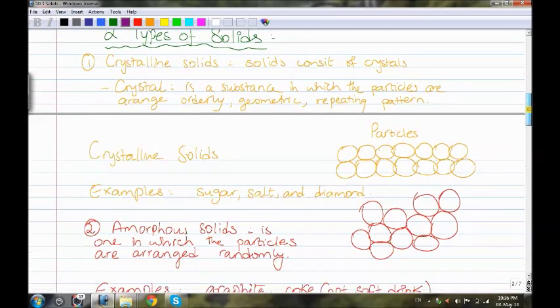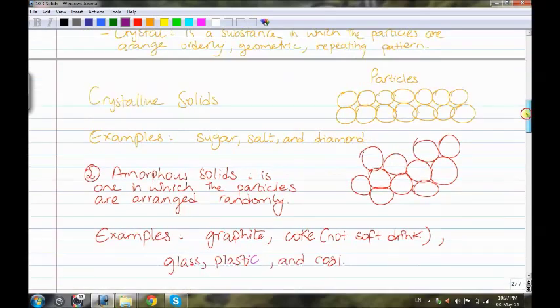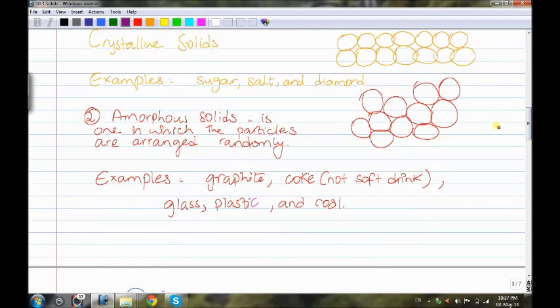Then we move on to the second type of solids, which is the amorphous solid. It is one in which the particles are arranged randomly. As you can see here, they are in a random arrangement. Examples include graphite, coke—not the soft drink, it's a form of carbon—then glass, plastic, and coal.